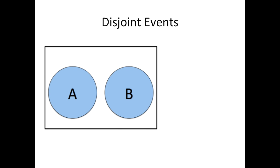Let's look at an example of disjoint events. This Venn diagram shows event A and event B, and you can see that there's no overlap between the two events. In this case, the probability of A or B would be equal to the probability of A plus the probability of B, because they're disjoint events and there's no overlap that we need to take into account.